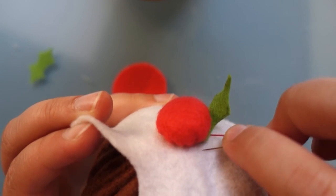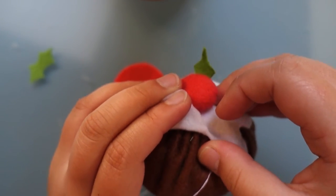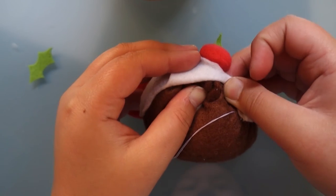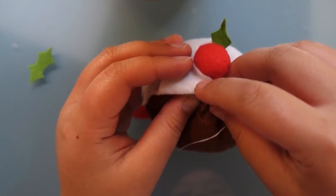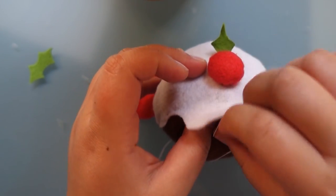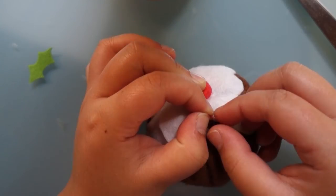When you've made it secure, we want to secure the thread so we want to push the needle through to the underside of the icing at that flap that we left open beforehand. And then you just want to cut your thread off and tie a knot.